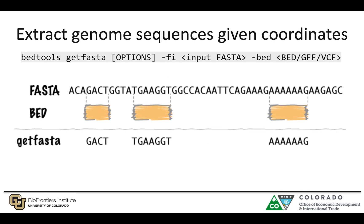Another very useful command is bedtools getfasta. Given BED file coordinates, you can specify regions you want to extract from a FASTA file and retrieve those sequences using the FASTA file and the BED file together. You'll get the sequences that you can then use for downstream analyses.